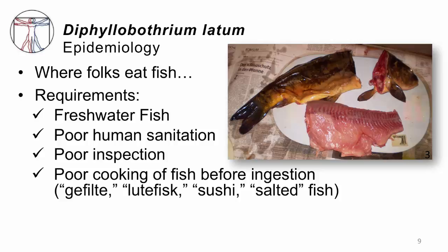Who gets this infection? At a glance you'd say you have to eat freshwater fish, but it's more than that. You need freshwater fish, poor human sanitation where people are defecating into the water, a lack of an inspection or safety system for fish meat, and cooking practices where people aren't cooking their fish. This happens culturally across the world — it could be gefilte fish, lutefisk, sushi, or anyone who tries to salt their own fish may do an inadequate job of it.